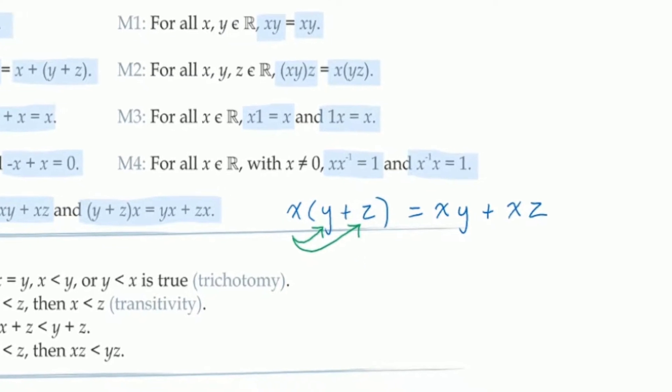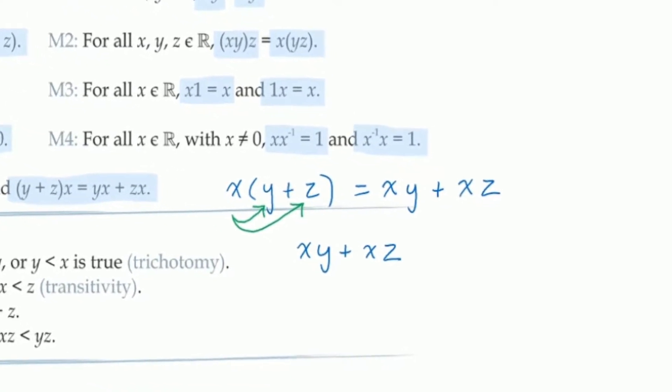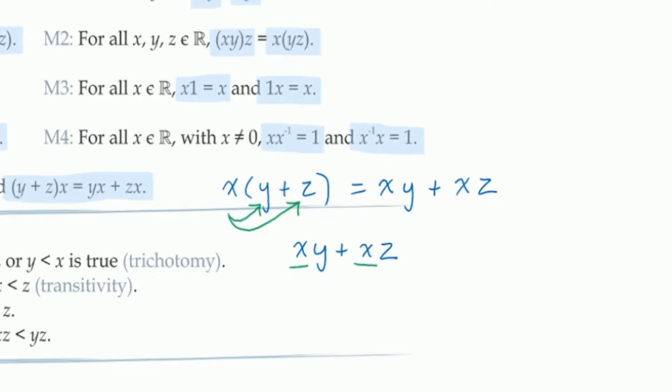For example, if we see x times y plus x times z, sharing the common factor x, we can factor out that common x, and write it as x multiplied by the sum y plus z. In this way, the distributive law allows us to both expand and to factor.